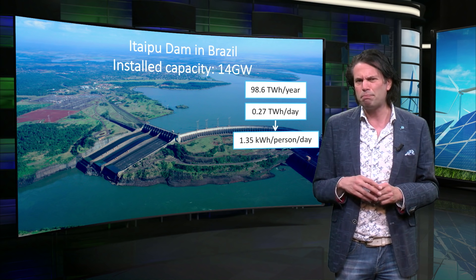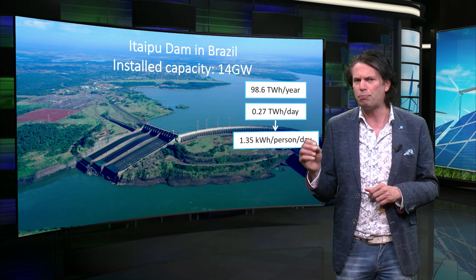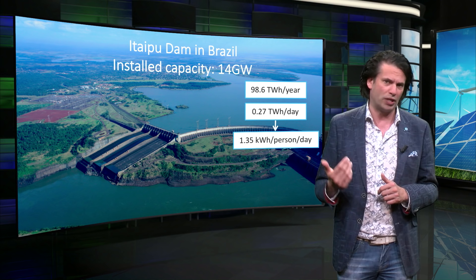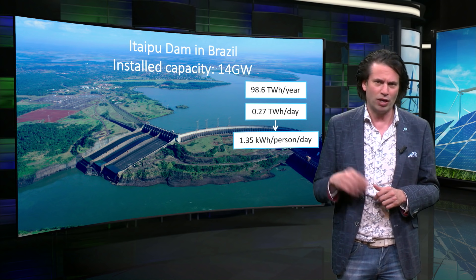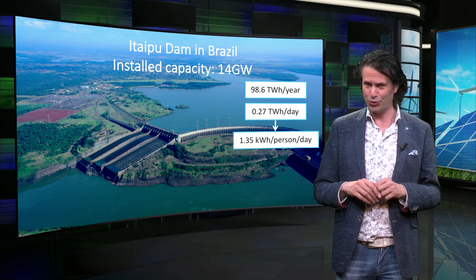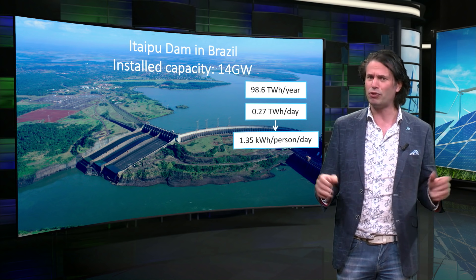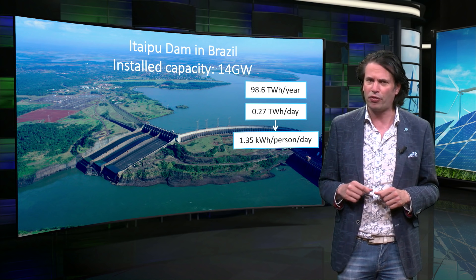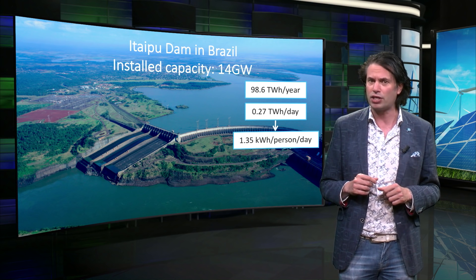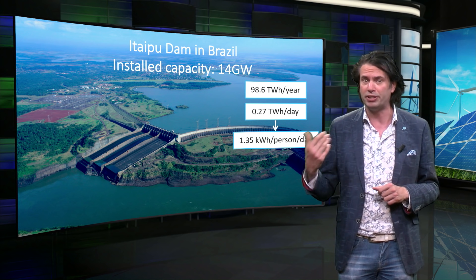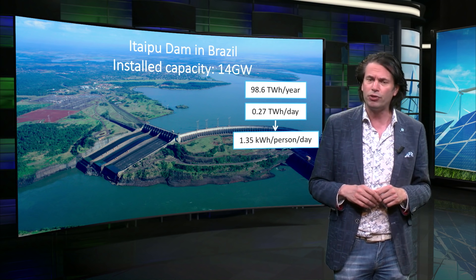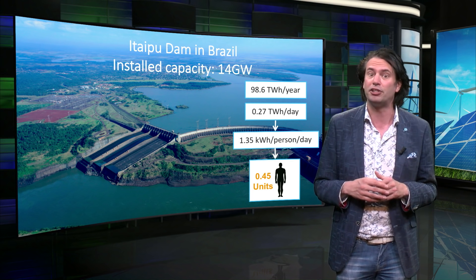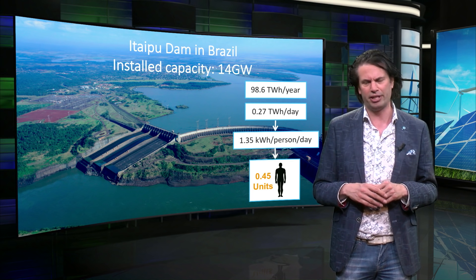Let's relate that back to the energy unit of one person as we discussed last week. One personal unit of energy was equal to 2.9 kWh per day, so 1.35 kWh per person per day would equal 0.45 man units of energy production per day.